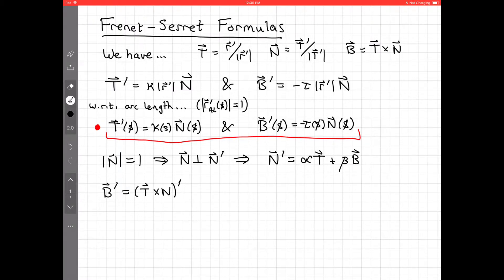And differentiate that, again, by the product rule. This is t' cross n plus t cross n'. As before, n by definition is t' rescaled, so these guys are parallel, and so that's 0. So we get t cross n'.